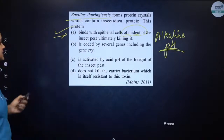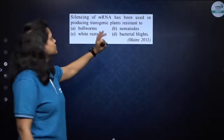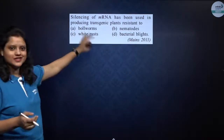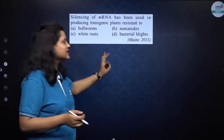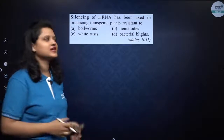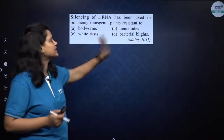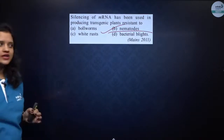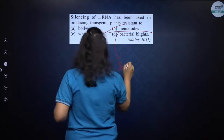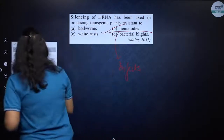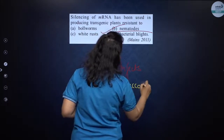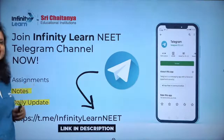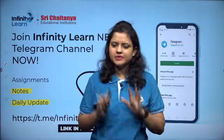Silencing of mRNA has been used in producing transgenic plants resistant to which parasite? Options include bollworm, nematoda, white rust, and bacterial blight. The correct option is B — nematoda, specifically Meloidogyne incognita, which infects the tobacco plant.